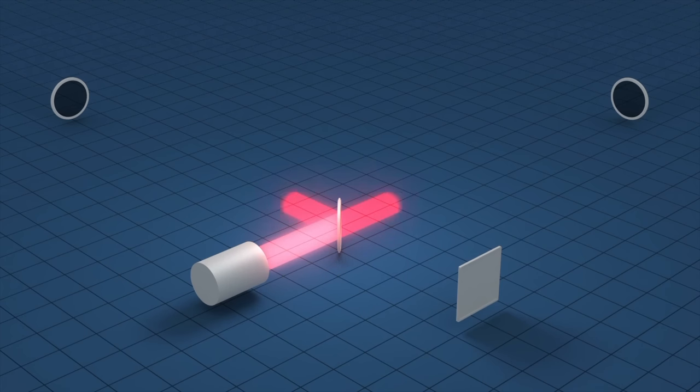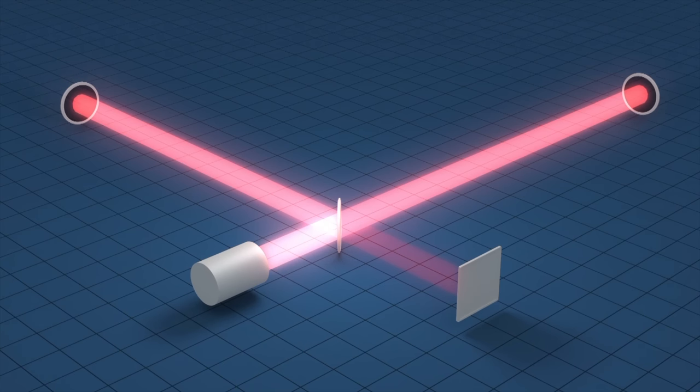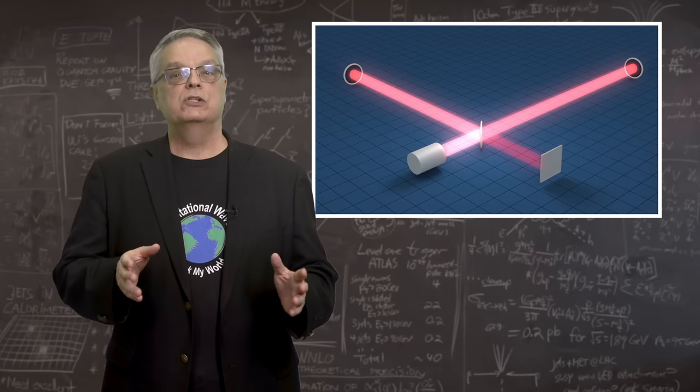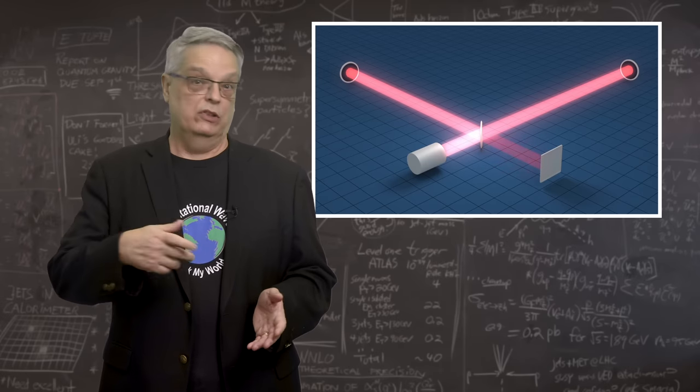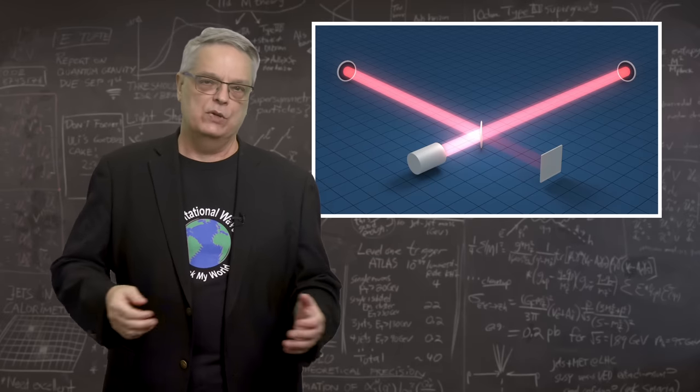A laser is shined down the tube to a mirror and then reflected back to a detector. Using some very precise optics and multiple reflections, the LIGO facility can measure changes in the length of the legs as small as one one-thousandth the length of the proton. It's just amazing.